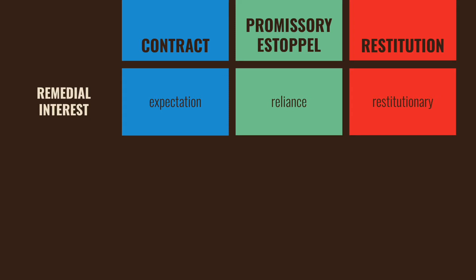Most of the time the promisee is making the contract because it's beneficial to them, so they would want to be put where they expected to be if the contract had gone as expected. With promissory estoppel, the interest being vindicated is typically reliance — it's about detrimental reliance on the promise — and often the recovery is based in reliance as well. With restitution, it's based on a restitutionary interest, meaning it's rooted in the idea of unjust enrichment, that one party should be paying the other for the value of the benefit bestowed on them.